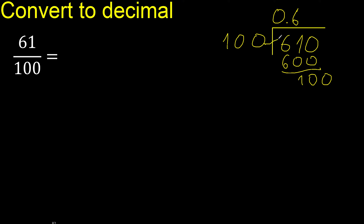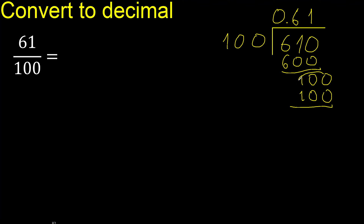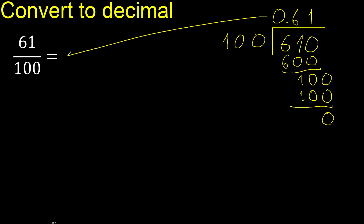100, 100 multiplied by which number? Multiplied by 2 is 200 — is greater. Multiplied by 1 is 100. Subtract: 0, 0 — therefore finish.